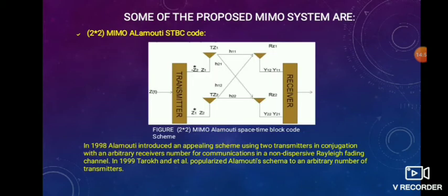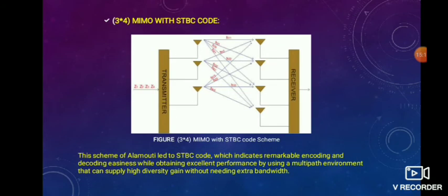Some proposed MIMO systems include 2x2 MIMO LMRT STBC codes, which are implementations of Alamouti codes — a diagram shows 2 transmitting antennas and 2 receiver antennas. The second proposed system is 3x4 MIMO, with 3 transmitters and 4 receivers, which is still being established and provides greater performance in a multipath environment.